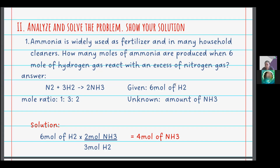We multiply the 6 moles of hydrogen by the mole ratio of 2 moles of ammonia divided by 3 moles of hydrogen. This gives a final answer of 4 moles of NH3.